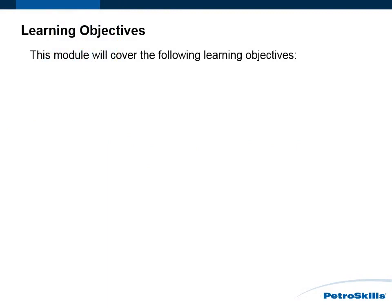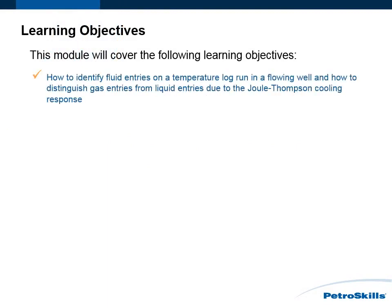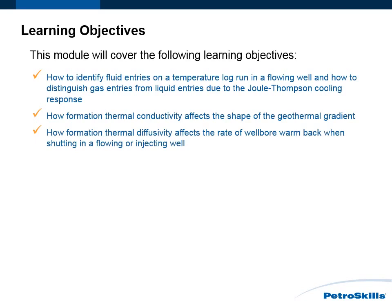In this module you will learn how to identify fluid entries on a temperature log run in a flowing well, and how to distinguish gas entries from liquid entries due to the Joule-Thompson cooling response. How formation thermal conductivity affects the shape of the geothermal gradient. How formation thermal diffusivity affects the rate of wellbore warm back when shutting in a flowing or injecting well. How to calculate relative flow rates from a flowing temperature log.